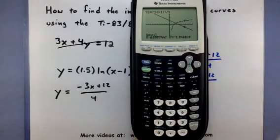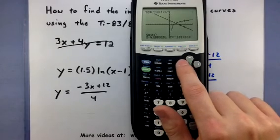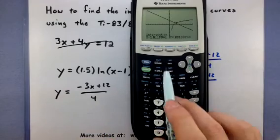Now the last thing we want to find, it says guess. So move this little blinking cursor as close to where they cross as you can and then press enter one last time. The calculator will go through its methods and actually come up with a value for x and y.